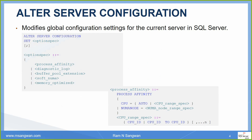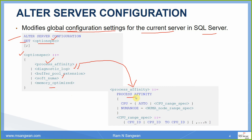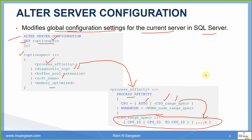The statement we use is ALTER SERVER CONFIGURATION. This is a server-level, global configuration setting for the current server in Microsoft SQL Server. The syntax is: ALTER SERVER CONFIGURATION SET option_name. The options you can specify include: PROCESS AFFINITY, DIAGNOSTIC LOG, BUFFER POOL EXTENSION, SOFT NUMA, and MEMORY OPTIMIZED. PROCESS AFFINITY can take CPU range specification values — this is a hierarchical substitution syntax.